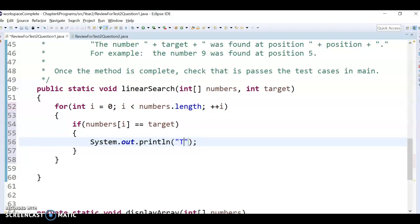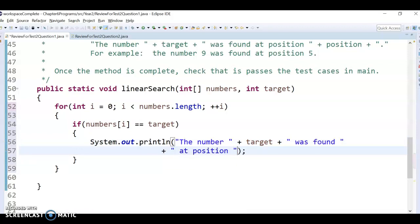Of the, and you could modify this a little bit, but I'm going to say the number plus the target number was found. I'm going to do another line here just to give myself a little more space. At position, and then the position it was found at would be i. We're in the i-th position. Okay, so if we find it, we do that.